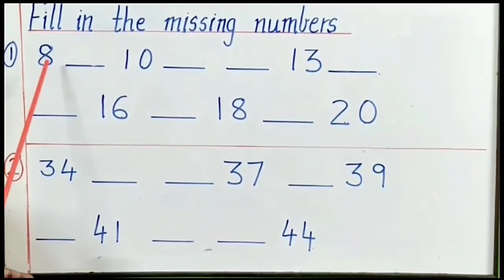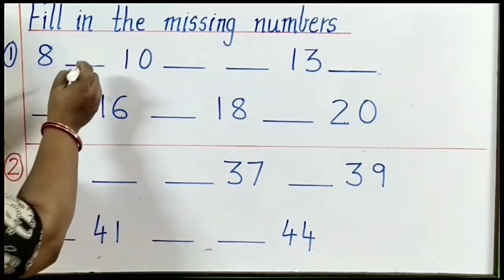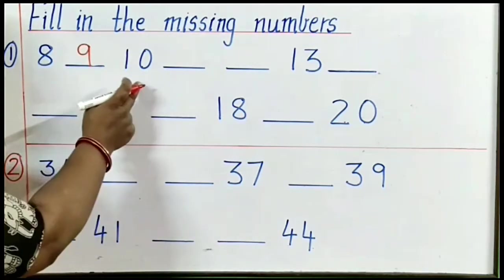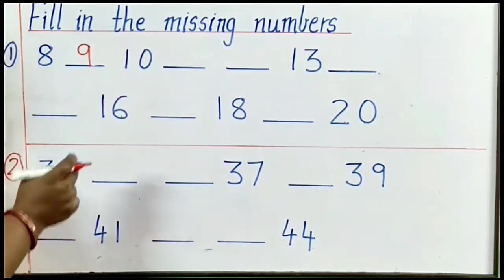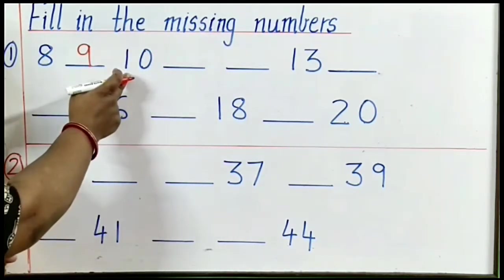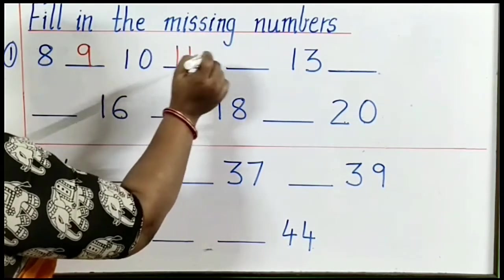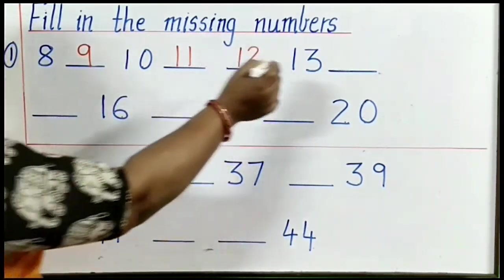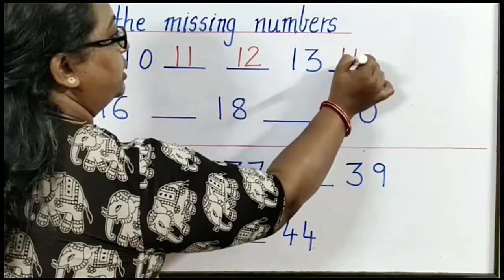Number 1, the first number is 8. After 8, what comes after 8? Yes, 9. After 9, 10. Shall we write the number again? No, because 10 is already here. After 10, 11. After 11, 12. Then 13 is already there. After 13, 14.